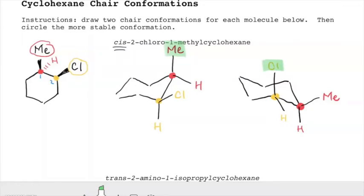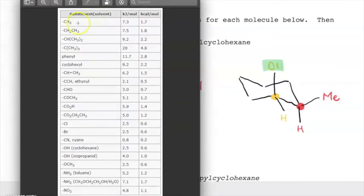The question becomes which one is more stable - which one is harder or easier to put into the axial position. We can determine this quantitatively using A values. A values tell you how much energy is required to put that substituent into the axial position. We're comparing a methyl group (CH3), which takes 1.7 kcal per mole to put into the axial position, versus chlorine, which is 0.6 kcal per mole.